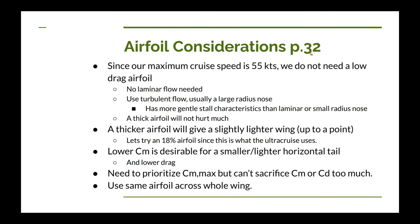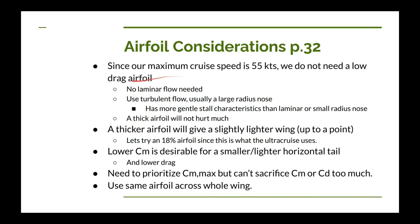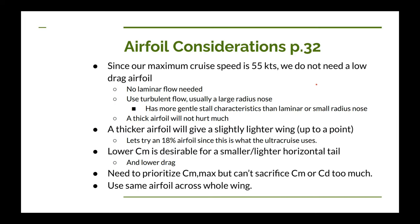Dan covers airfoil considerations on page 32 of his book. For an ultralight airplane our maximum level flight cruise speed is 55 knots due to FAA Part 103 regulations. Since we're going so slow, we really don't need a laminar flow airfoil — those are intended for much higher Reynolds numbers with a drag bucket in their cruise range. So we're going with a turbulent flow airfoil, which typically means a fairly large-radius nose. A small-radius nose can cause a really sharp stall, which is undesirable on these low-and-slow airplanes.